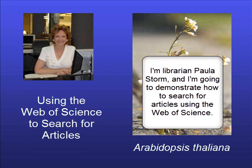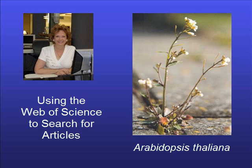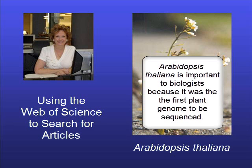I'm Paula Storm, the subject librarian for biology at Eastern Michigan University, and I'm going to demonstrate how to find an article on the genome for Arabidopsis thaliana using the Web of Science. Arabidopsis thaliana is a small flowering plant that's important to biologists because it was the first plant genome to be sequenced.